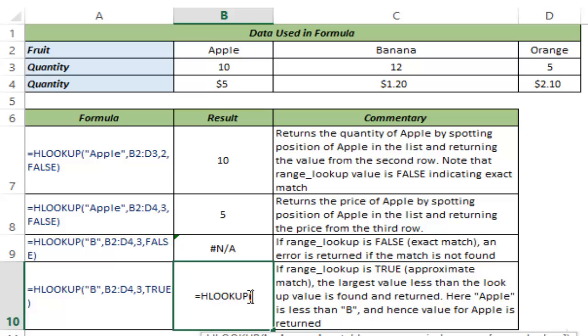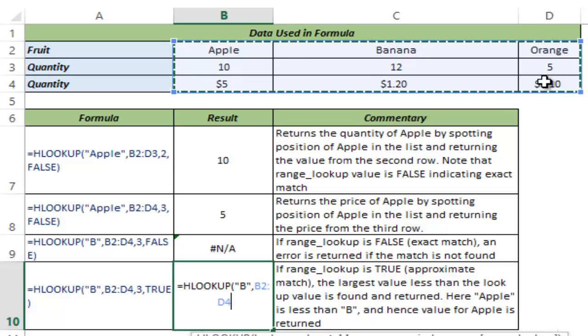I type HLOOKUP. My lookup value here is again B and I expect to find a value here because I am using an approximate match. The table array is this entire array.